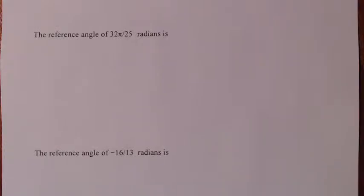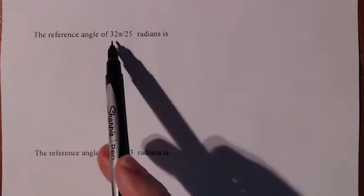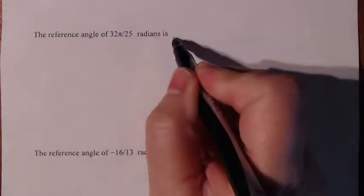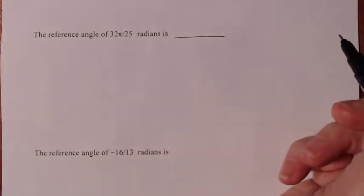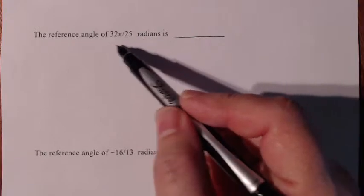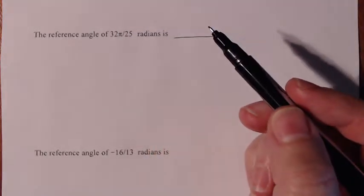This is a great question asked by one of my students, and I would like to show her the answer instead of just typing it up, so it might be more easy to understand. So we're trying to figure out the reference angle of 32π over 25 radians. The first thing you have to do is decide what quadrant 32π over 25 lies in.